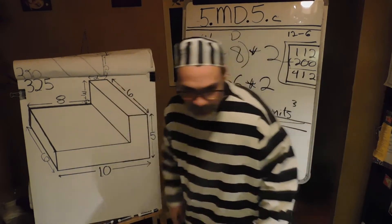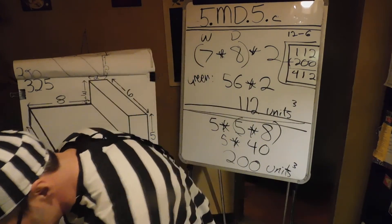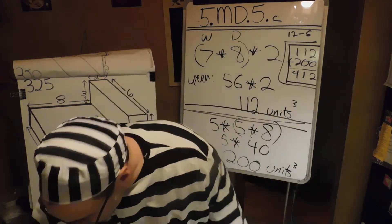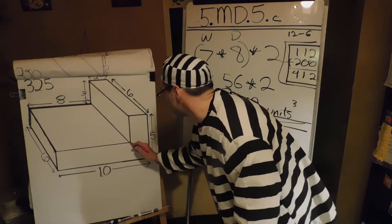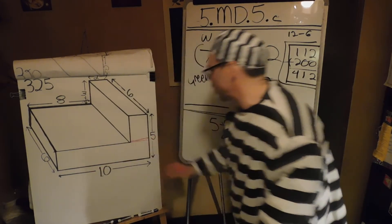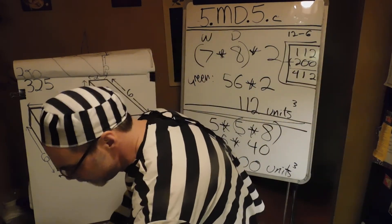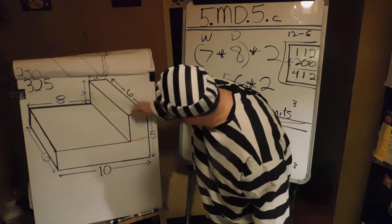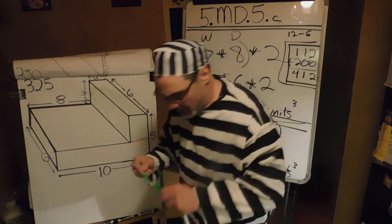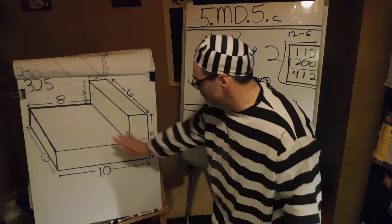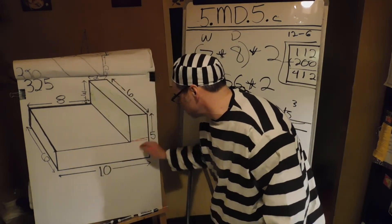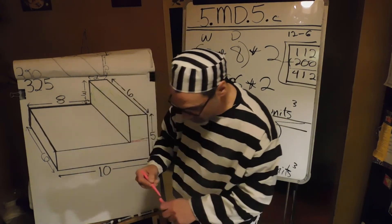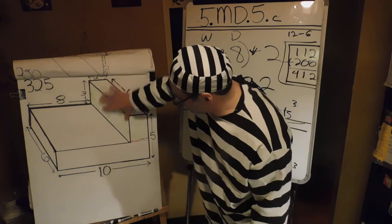So we're going to look at this one. We have the same thing going on here. Same as before, I'm going to put a line right here. This is going to be the green — hopefully you can see that. And then we've got the pink; it's this one on the bottom here. So we have the green here and the pink here.